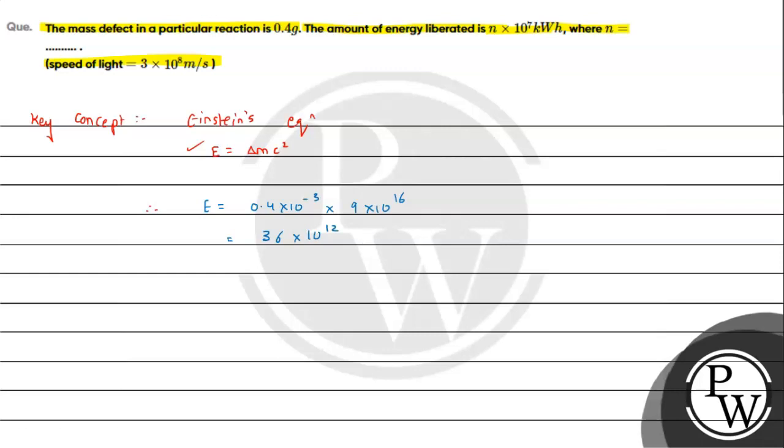And we can write this value as 3.6 times 10 raised to 13 Joules. Now we need to convert this to kilowatt hour. To convert to kilowatt hour, we divide by 3600.